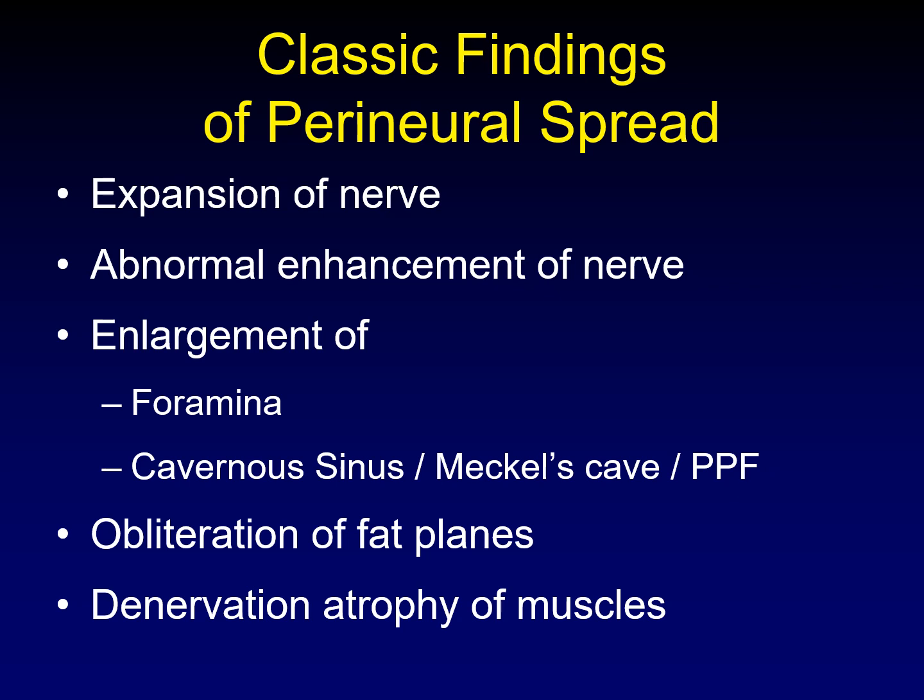Let's first talk about the findings of perineural spread so that we know what we're referencing when we talk about the mimics. A nerve affected by perineural spread is expanded and abnormally enhancing. It enlarges the foramina through which it travels and may enlarge the cavernous sinus, Meckel's cave, or the pterygopalatine fossa if those areas are involved. Importantly, there is obliteration of fat planes surrounding the normal nerve, best seen on T1-weighted unenhanced sequences. Denervation atrophy of downstream muscles is also a frequent finding.